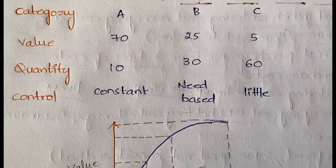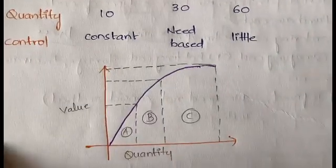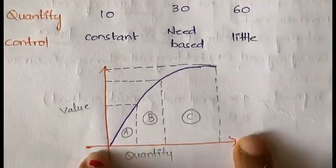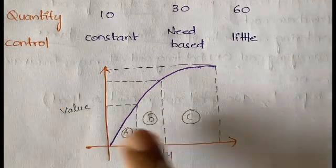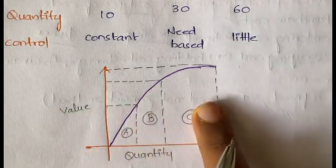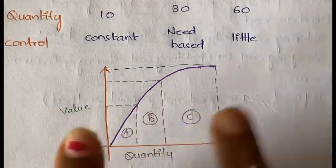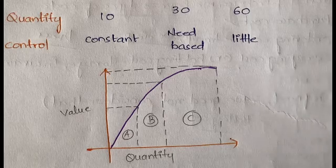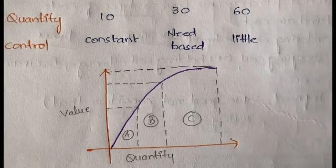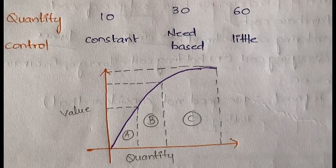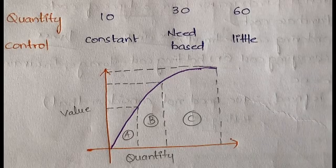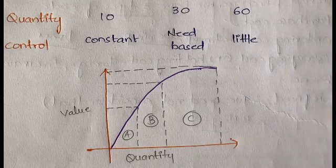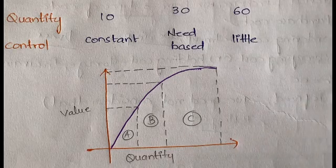Looking at the graph with quantity on one axis and value on the other, we can see A, B, and C clearly. In ABC analysis, most priority is given to the importance of the material rather than the quantity of the material.